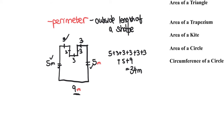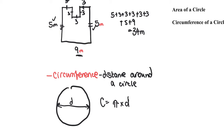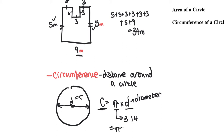The only other thing we looked at in length is a special kind of perimeter called circumference. Circumference is the distance around a circle, and we use the formula: circumference equals pi times d. If you don't have a pi button on your calculator, we normally use 3.14 as the equivalent. The letter d stands for diameter, which is the distance from one end of a circle to the other crossing the middle. So if the diameter is five, your answer would be pi times five, which equals 15.7 to one decimal place.